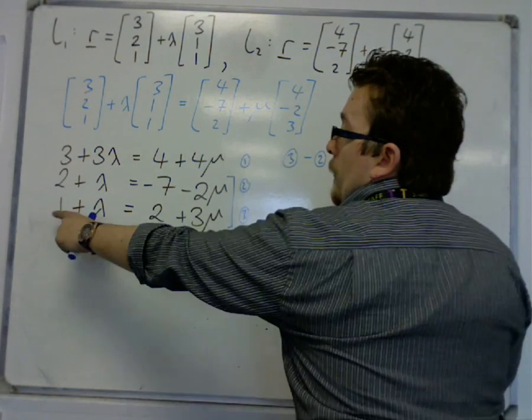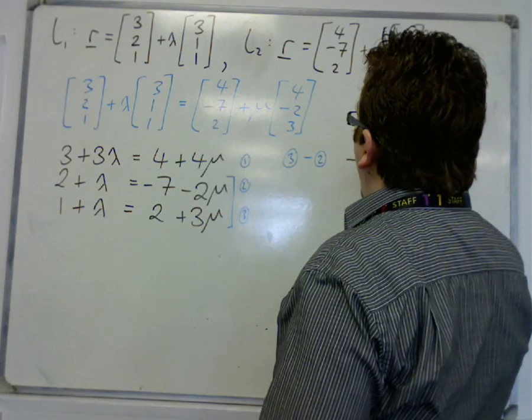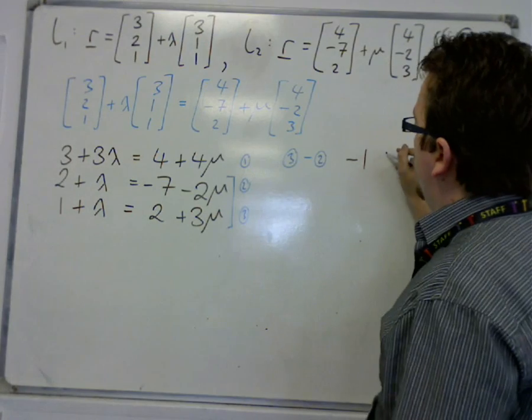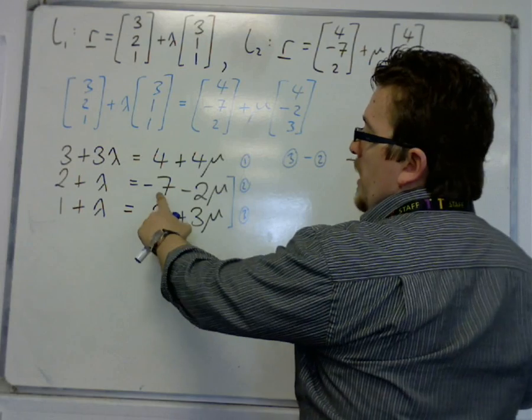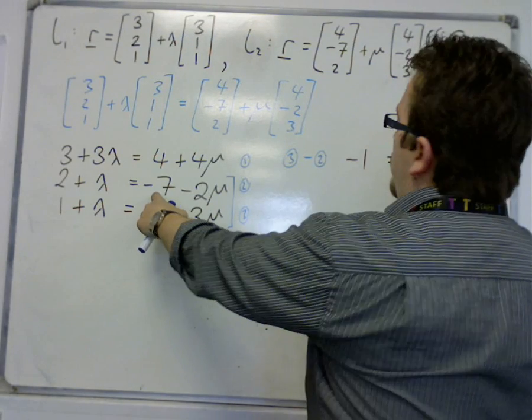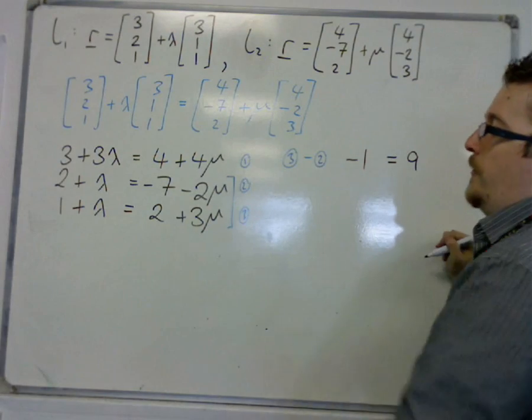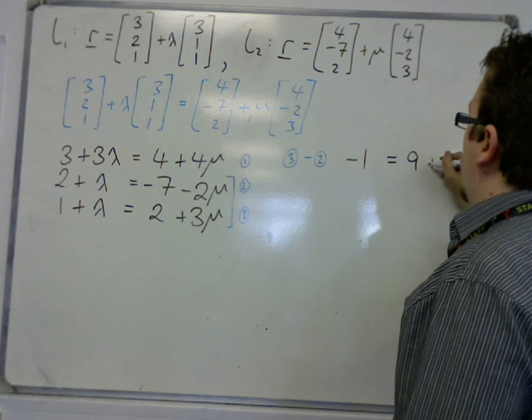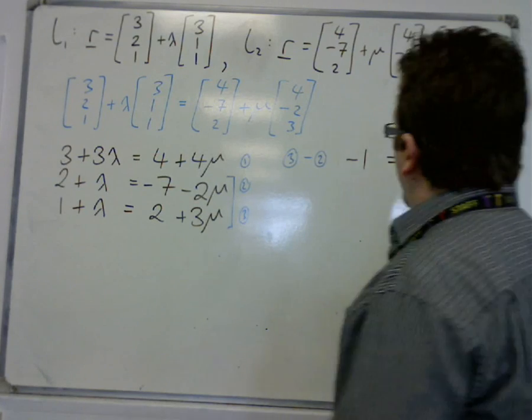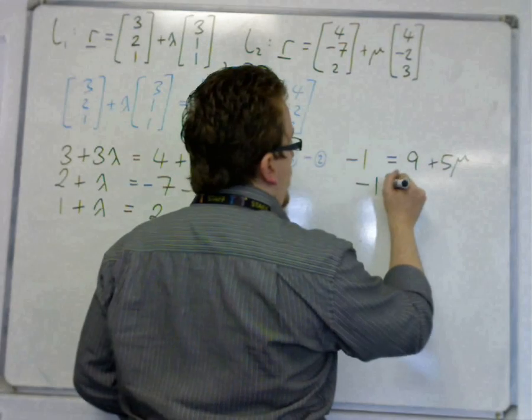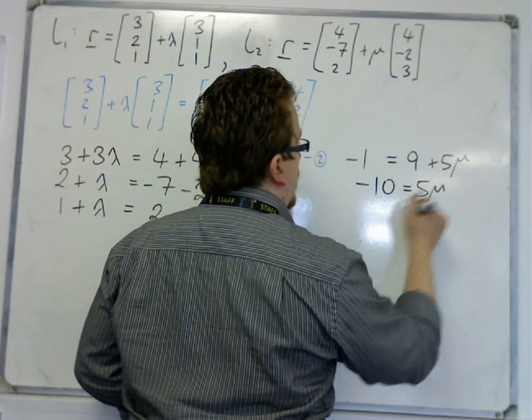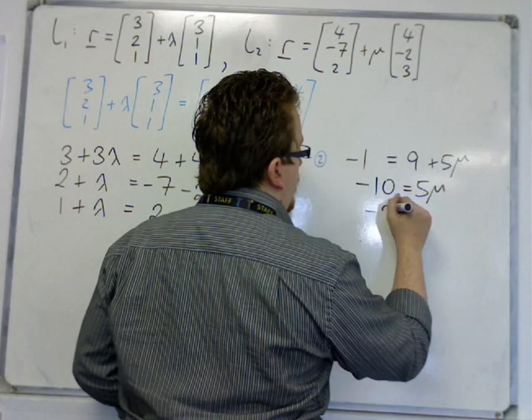So I have 1 take away 2 is minus 1, lambda take away lambda is 0, 2 take away minus 7 is 9, and 3 take away minus 2 is 5 mu. So mu is minus 2.